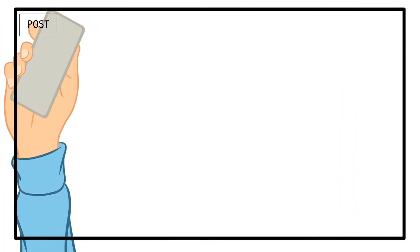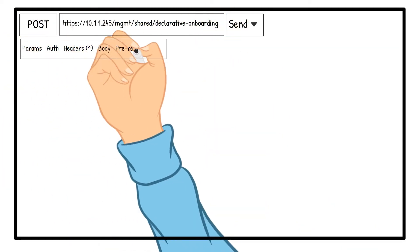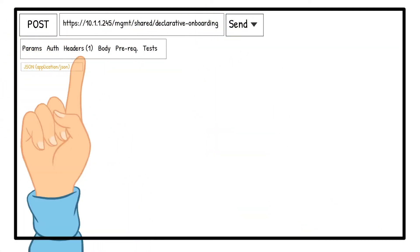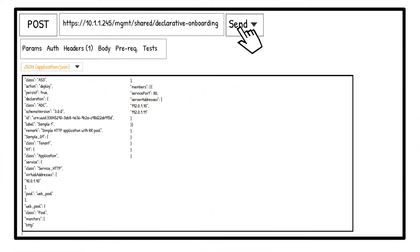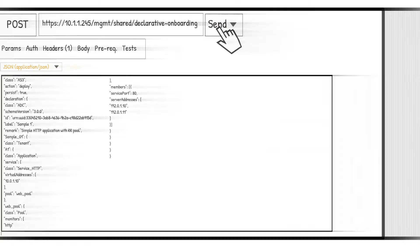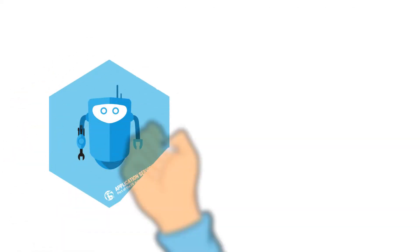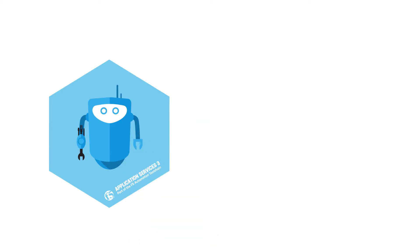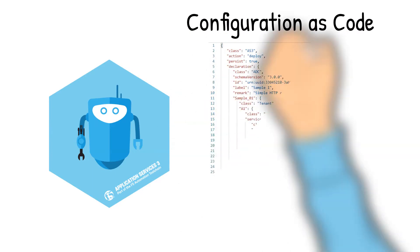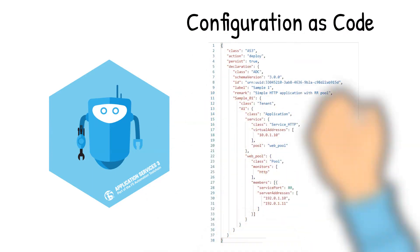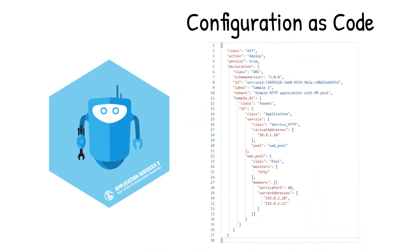Would it be nice if the configuration were code to be run with the push of a button and the objects be created on the fly with the ability to recreate them at any time? With F5's Application Services 3 extension, it provides you the ability to create the configuration as code using a declarative interface within the BIG-IP for managing application-specific configurations.